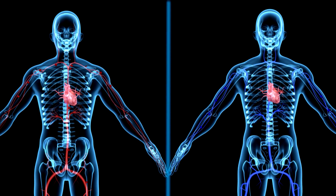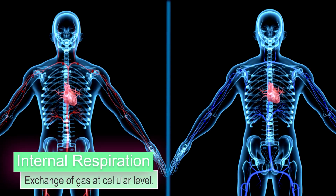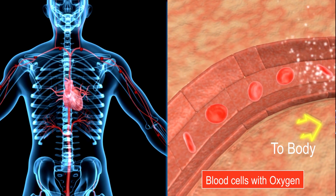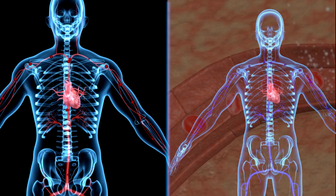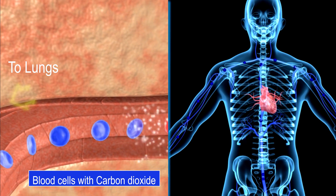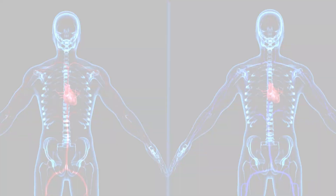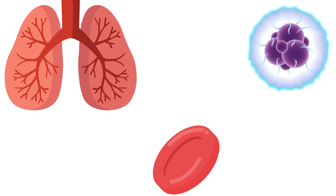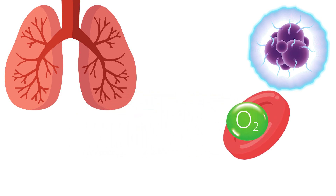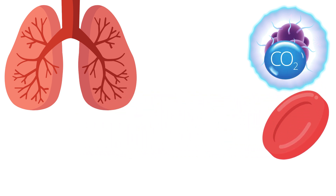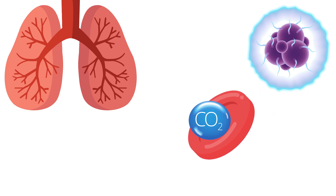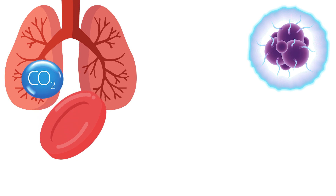Internal respiration is defined as the exchange of gas at the cellular level. During this process, oxygen is brought from the lungs to all other tissues of the body, while carbon dioxide is removed from the tissues back to the lungs as a waste product. As blood moves through the capillaries, it picks up oxygen and carries it to cells throughout the body. At the same time, the blood picks up the carbon dioxide produced by the cells and returns it to the alveoli, where it is released from the body during exhalation.